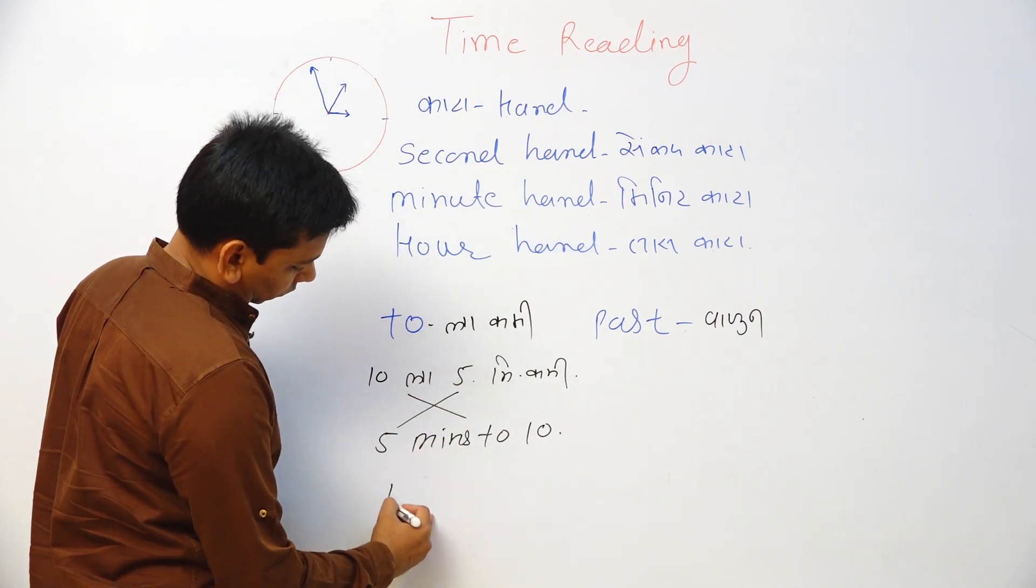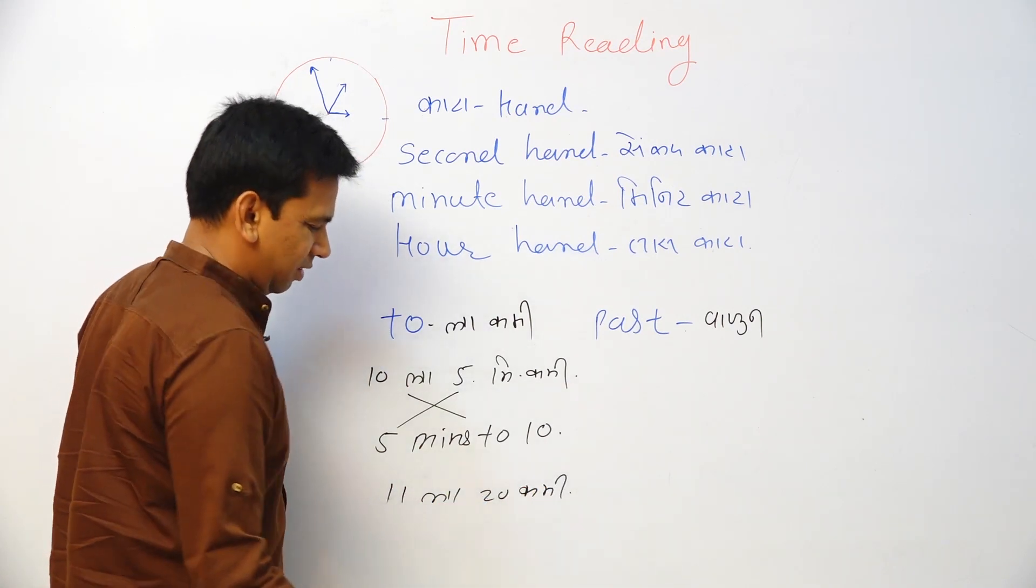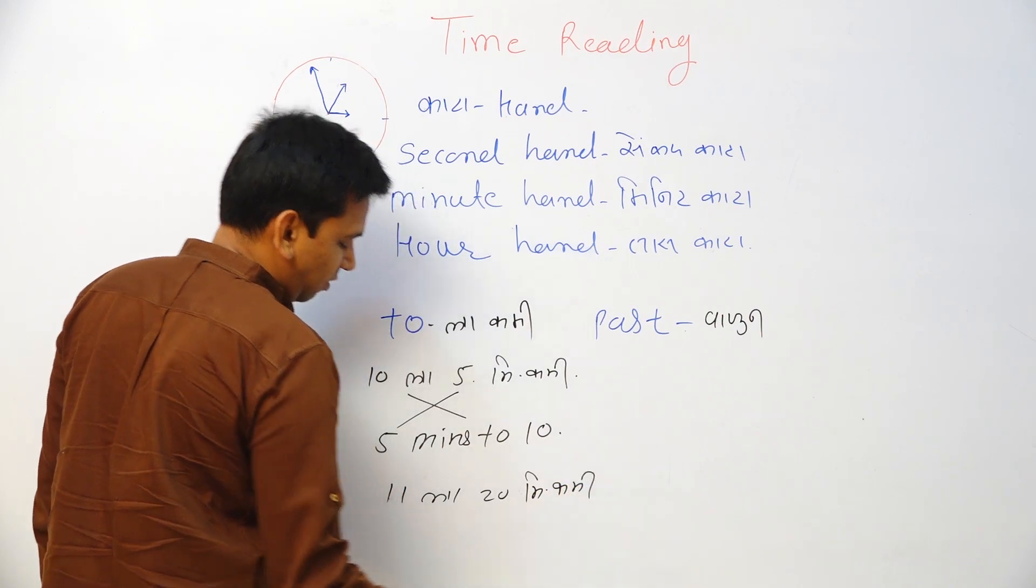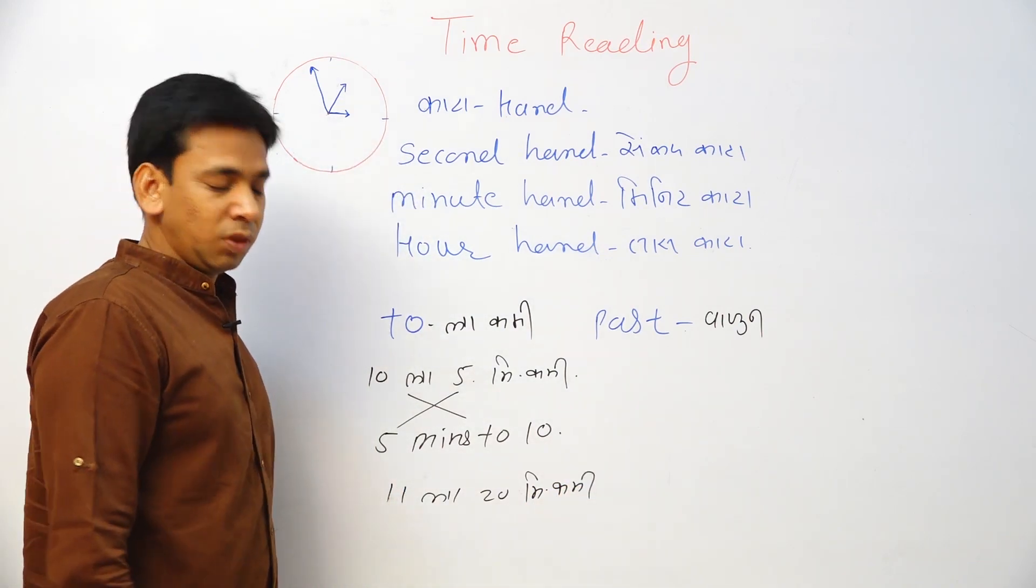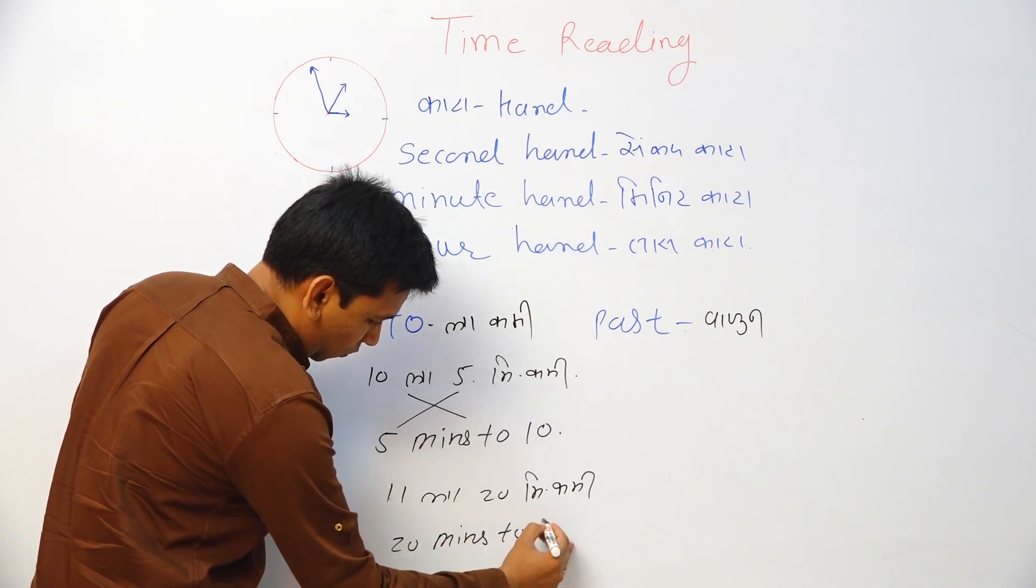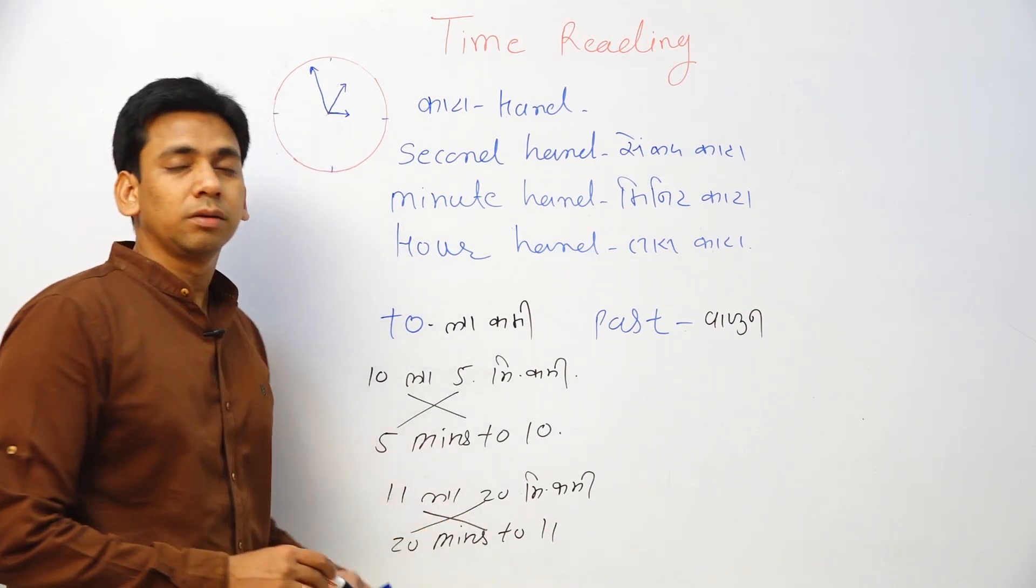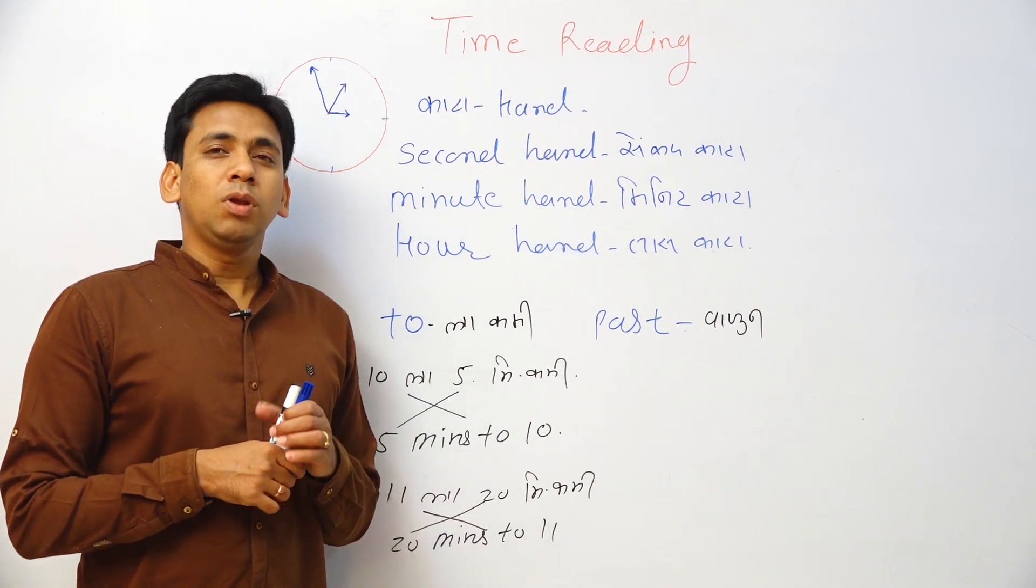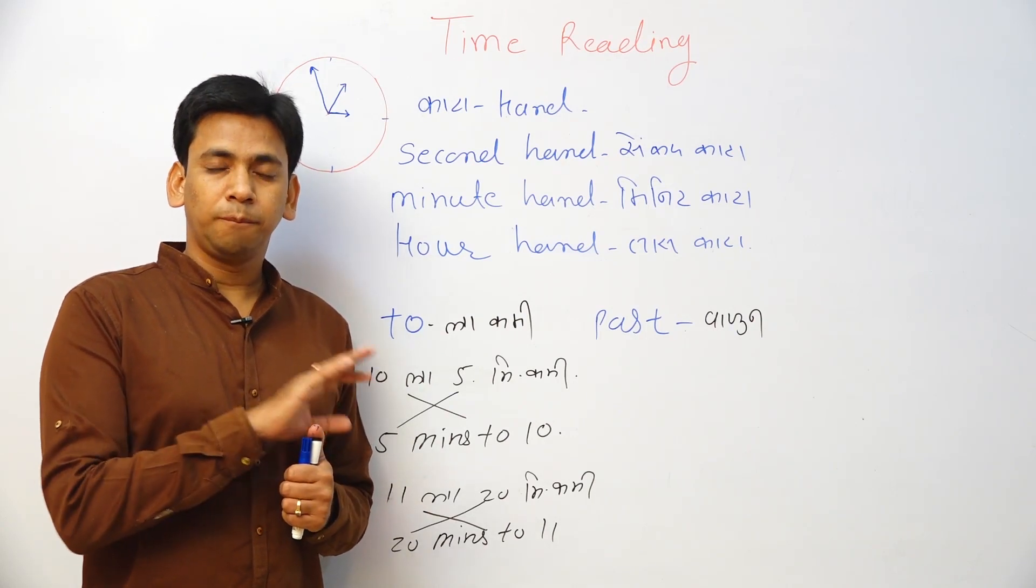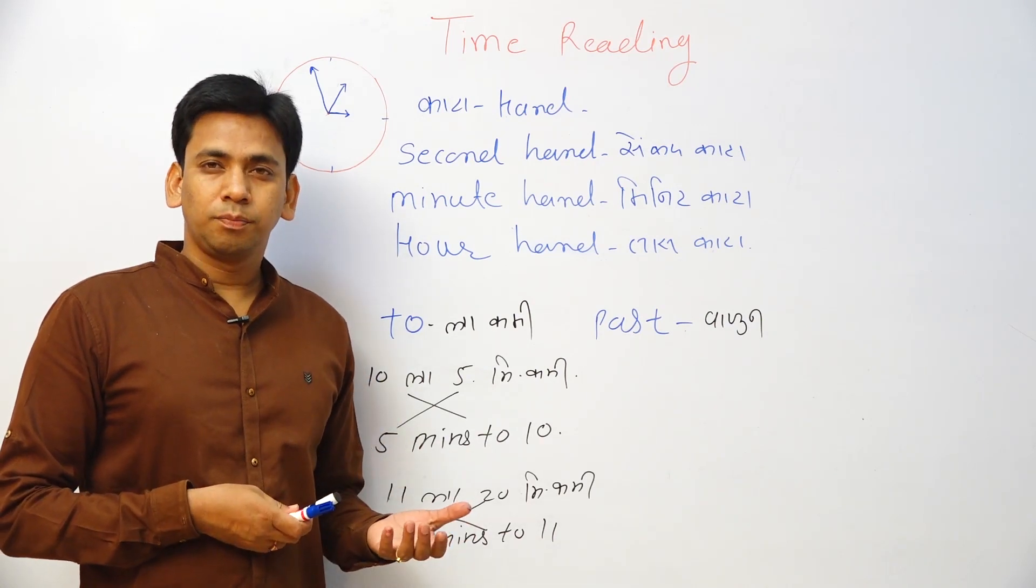11 o'clock minus 20 minutes. How can I say 11 o'clock minus 20 minutes? Twenty minutes to eleven. 9 o'clock minus 40 minutes. Forty minutes to nine. Forty minutes to nine. Getting?